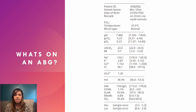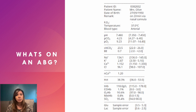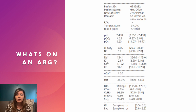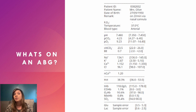So what's on a blood gas? As you can see, there are lots of values. These blood results differ from the usual blood samples we send because you analyze the blood yourself and can get the result back within minutes, which makes a big difference. For unwell patients, we want immediate values such as oxygenation, lactate, and whether their haemoglobin has dropped if they're bleeding — rather than waiting hours for an FBC.